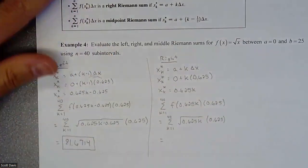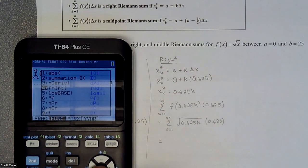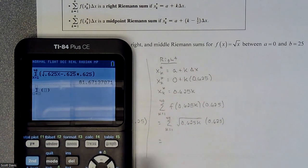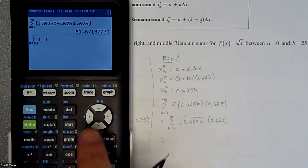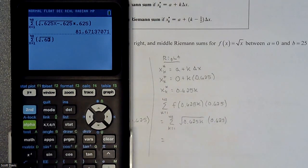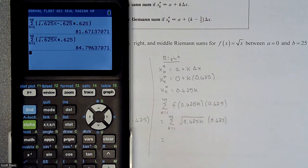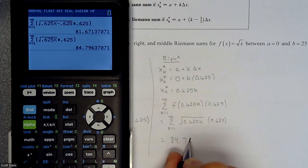That's going to be the summation from 1 to 40 of the square root of 0.625k times the width 0.625 — those are the heights all dictated by k. We plug that in using the F2 shortcut, going to summation, from x equals 1 to 40 of the square root of (0.625x) times 0.625 on the outside. We get 84.7964.